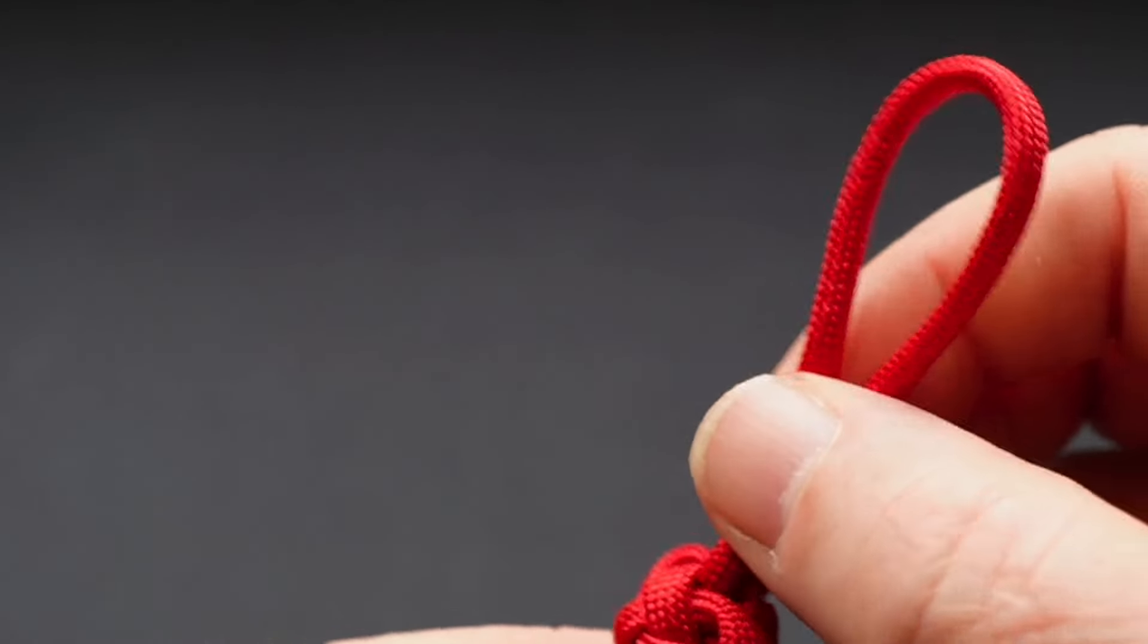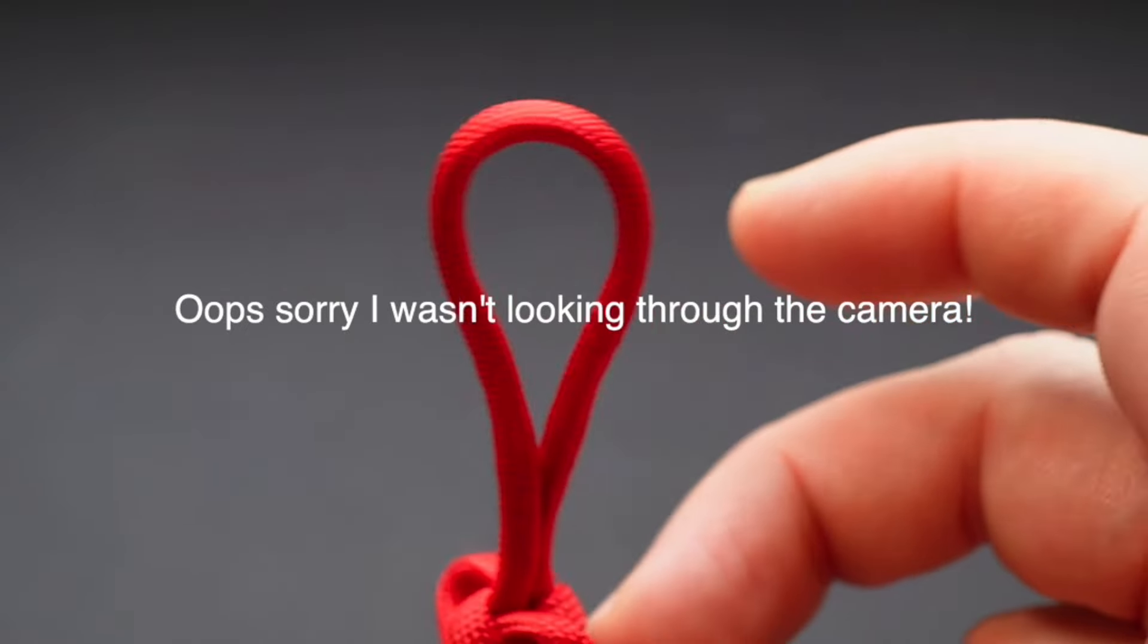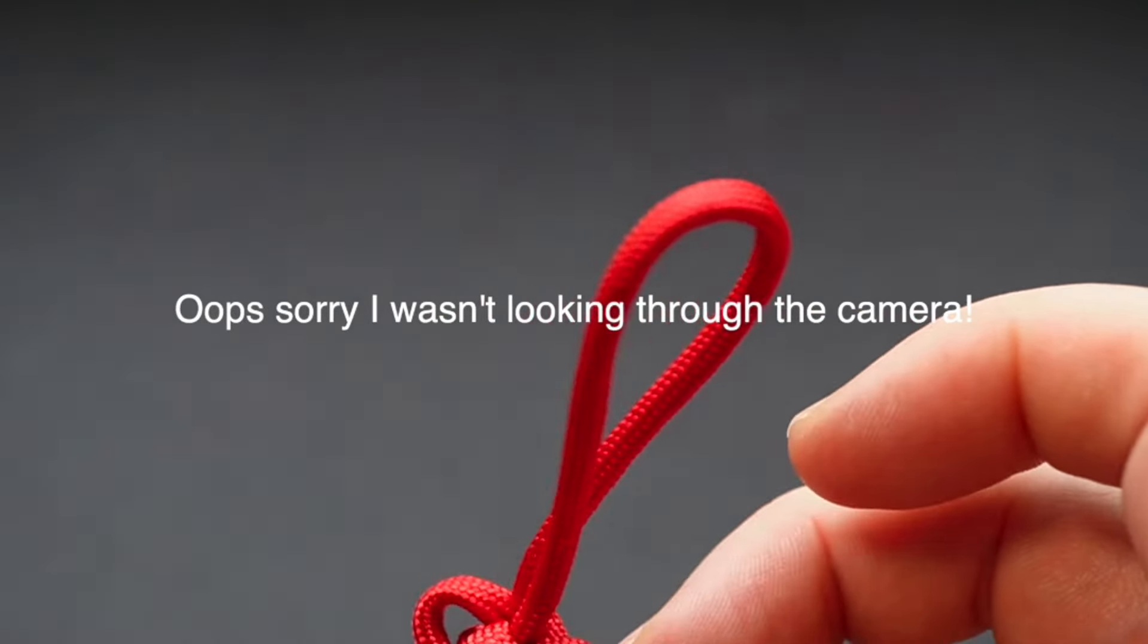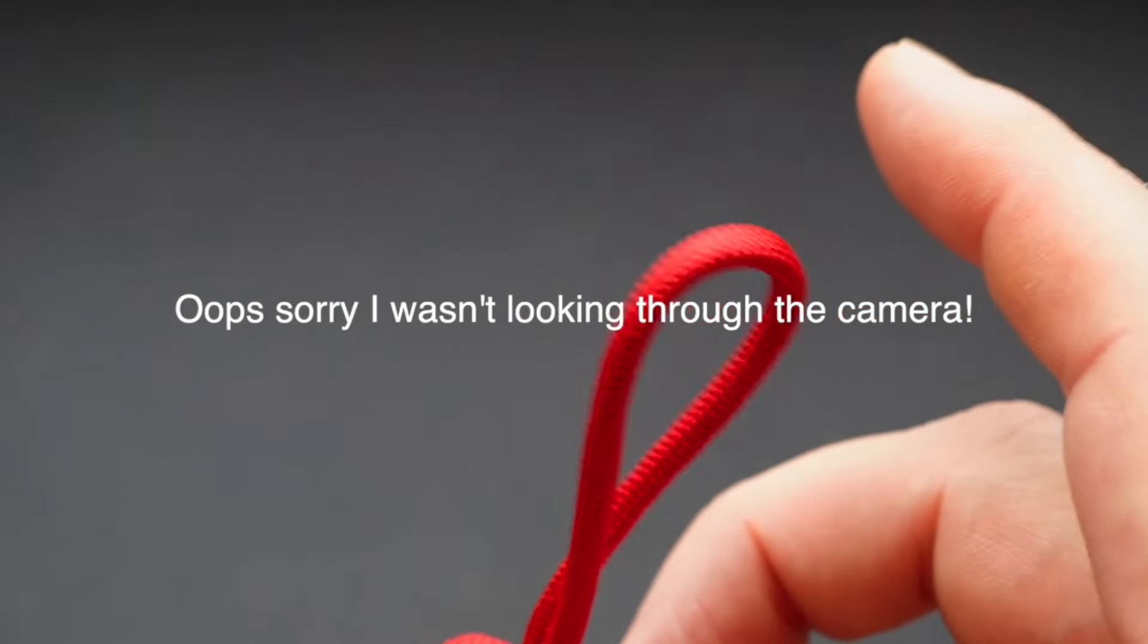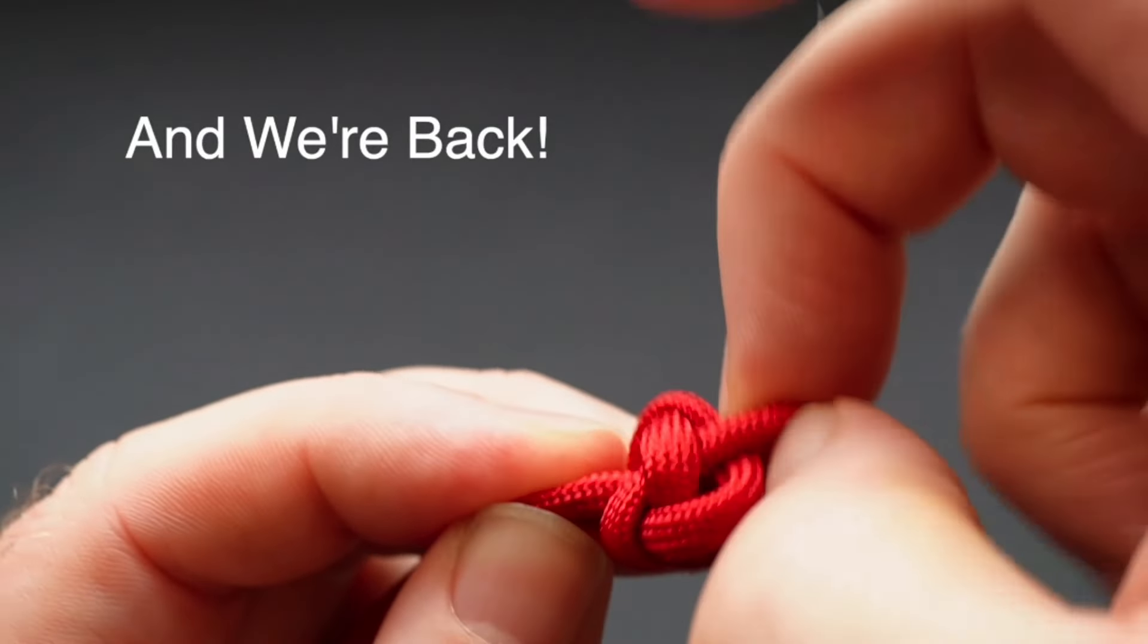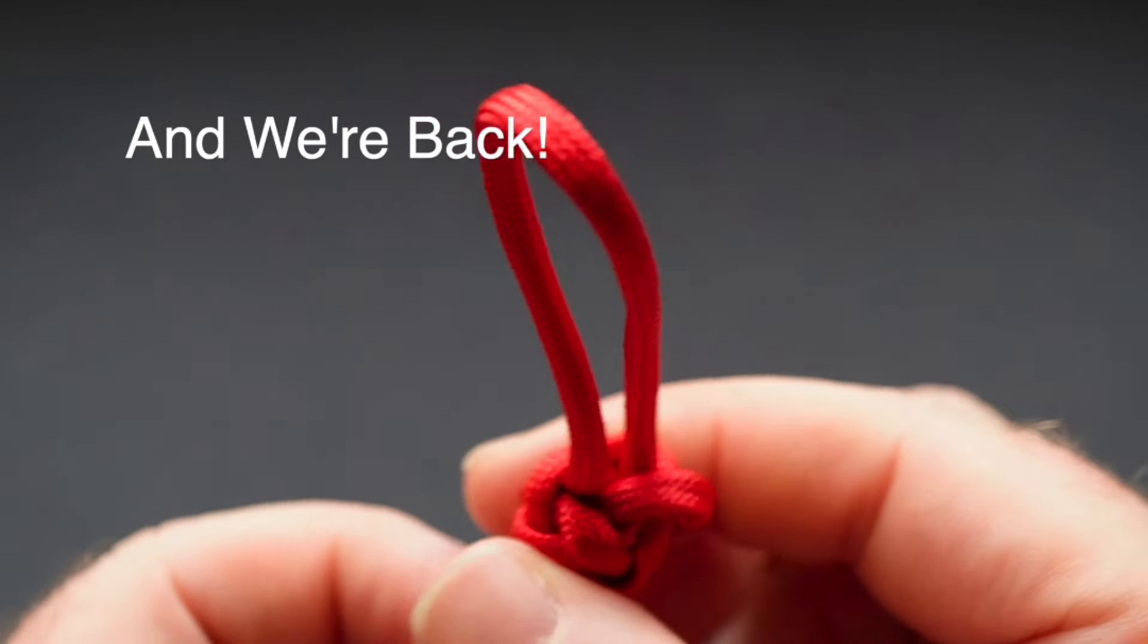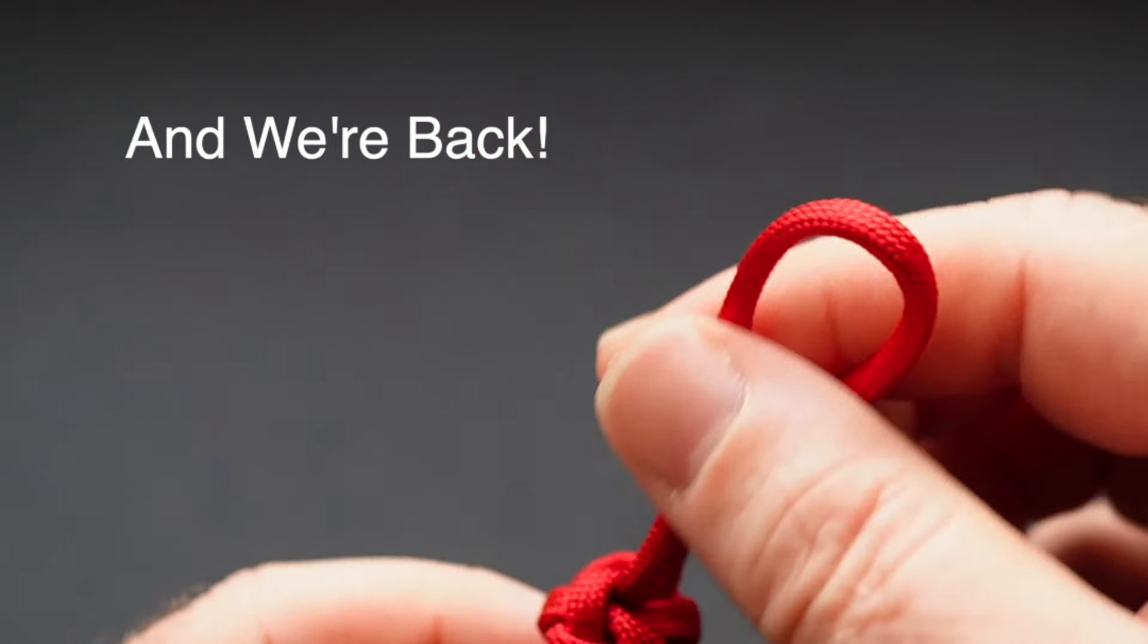But as you can see, it doesn't look very good at the moment. So now what we're going to do is take the slack out a bit. I'm just going to grab this front lobe piece here, and I'm going to follow it all the way through the knot. Well, that one's easy.